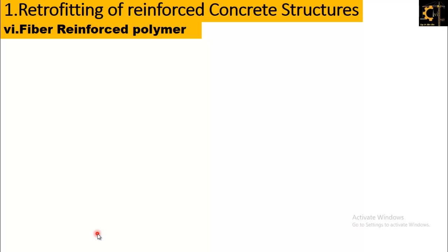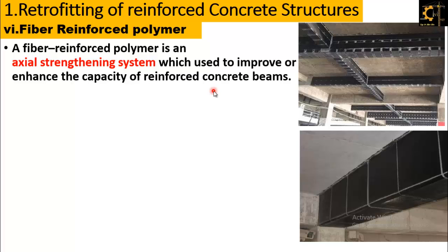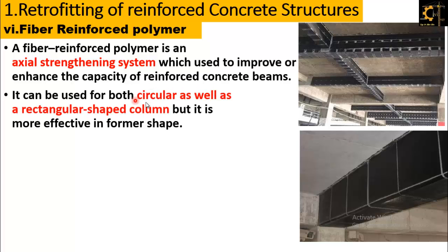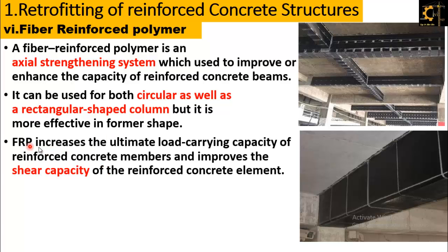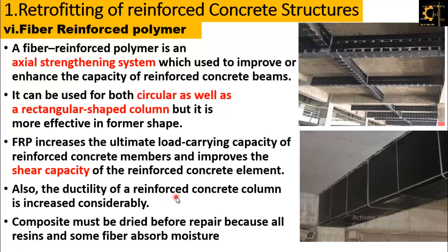The sixth technique of retrofitting is fiber-reinforced polymer (FRP). FRP is an axial strengthening system used to improve or enhance the capacity of reinforced concrete beams and can be used for both circular and rectangular shaped columns. FRP increases the ultimate load-carrying capacity of reinforced concrete members, improves the shear capacity of reinforced concrete elements, and considerably increases the ductility of reinforced concrete columns. Composites must be dried before repair because all resins and some fibers absorb moisture.